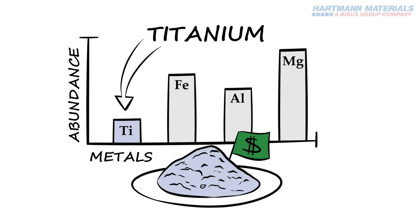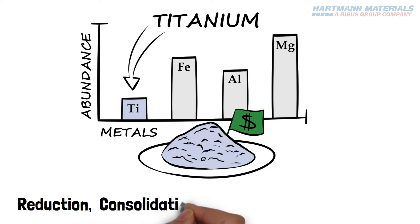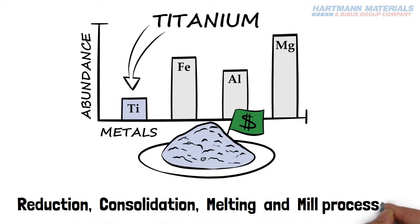The processing of titanium metal occurs in four major steps: Reduction, consolidation, melting, and mill processing.